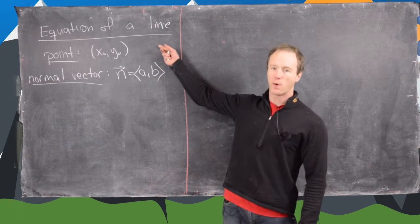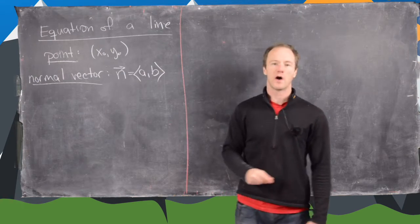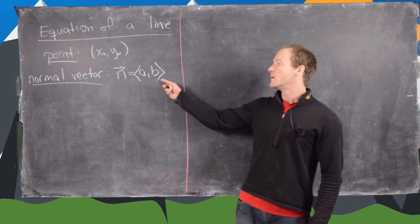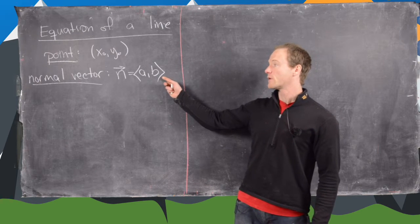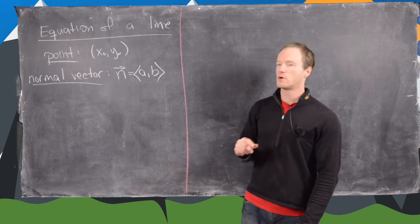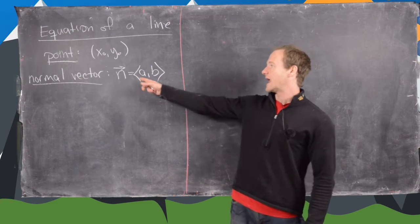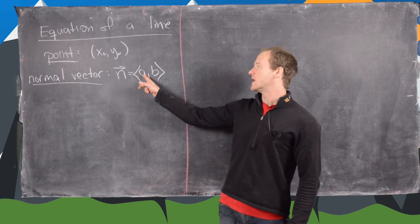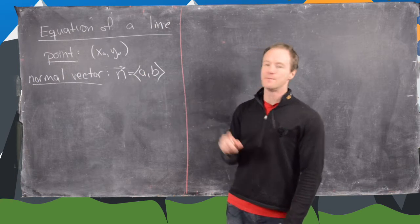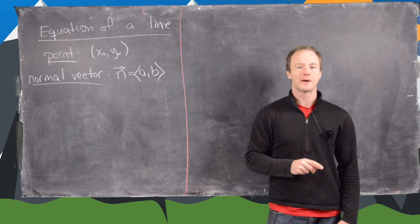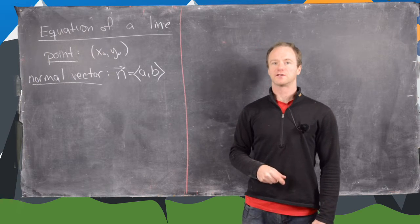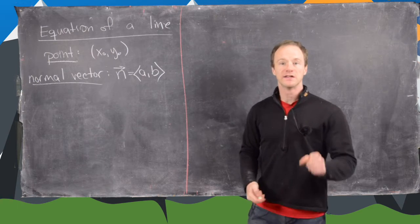So let's say we have a point x-naught, y-naught, and then we also have a normal vector n, which will be the vector a, b. By normal, this vector is perpendicular to the line.